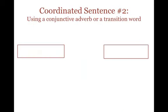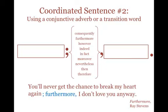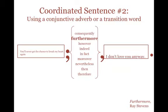The second way to write a coordinated sentence is by using a conjunctive adverb, such as 'consequently,' or a transition word, like 'furthermore.' This semicolon represents a very strong relationship between the two independent clauses. For example: 'You'll never get the chance to break my heart again; furthermore, I don't love you anyway.' The semicolon links these two clauses together.